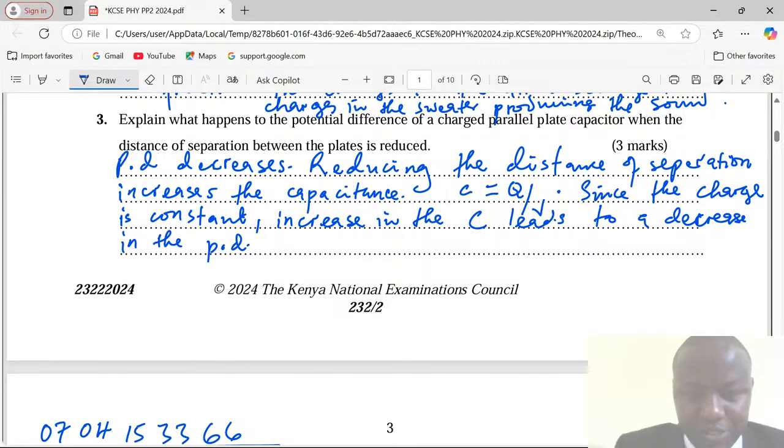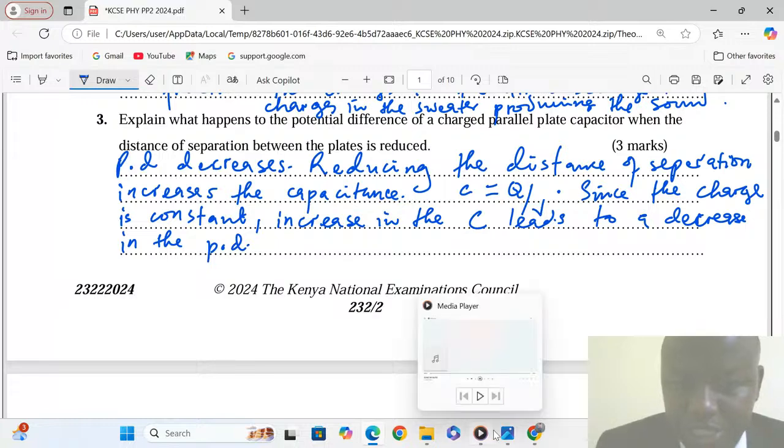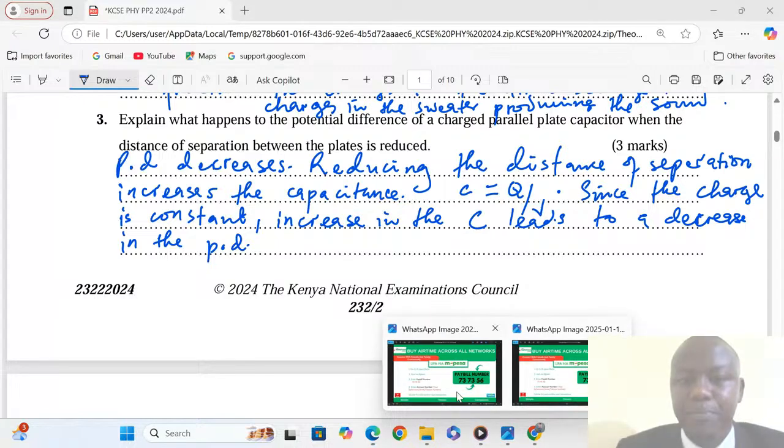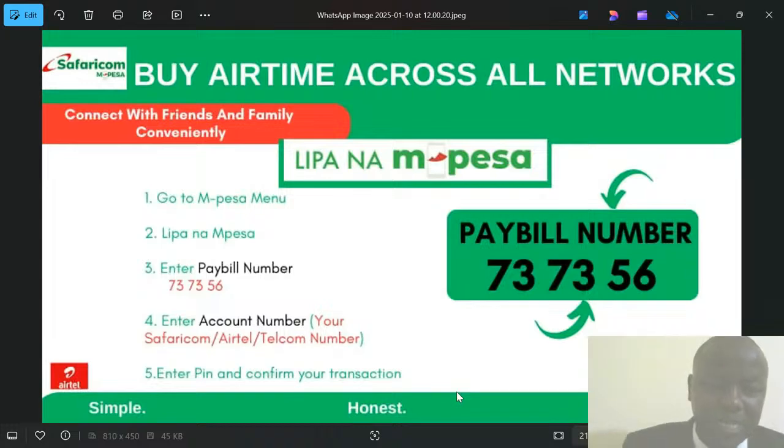As we continue covering our lessons, I should bring to your attention our airtime program, whereby you just go to the M-Pesa lipa na M-Pesa option. The pay bill number is 737356. Then the account number is the phone number that you'd like to purchase airtime for. After that you proceed with the transaction and your airtime is going to reflect instantly. Please try our procedure here. Use this for any network be it Safaricom, Telkom, Airtel. You're going to get the airtime.